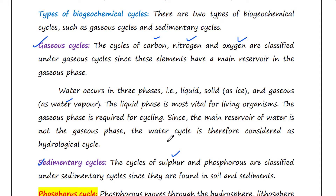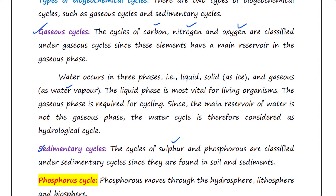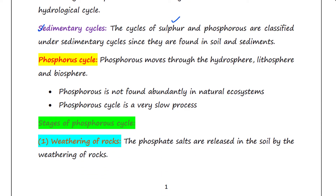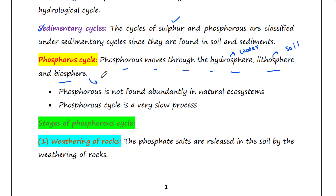Today we will talk about the phosphorous cycle. The phosphorous cycle is the process where phosphorous moves through the hydrosphere, lithosphere, and biosphere — that means through water bodies, soil, and living organisms.